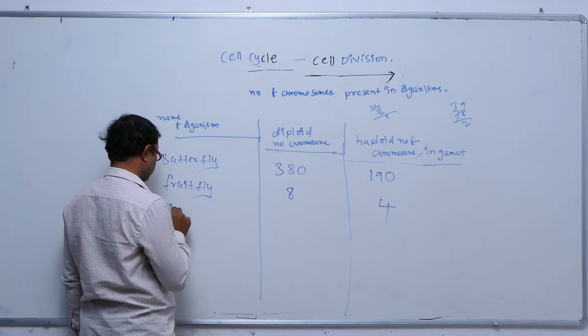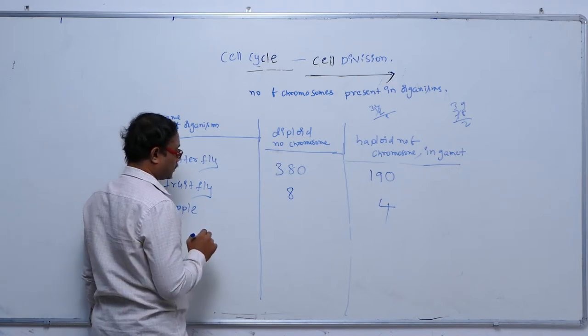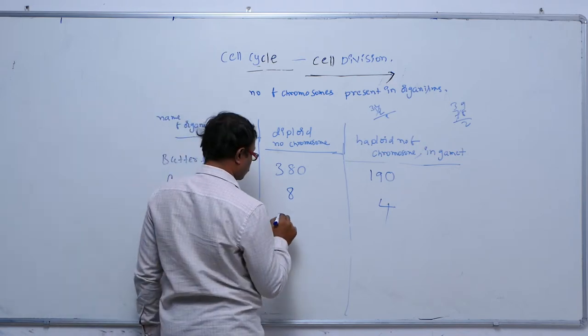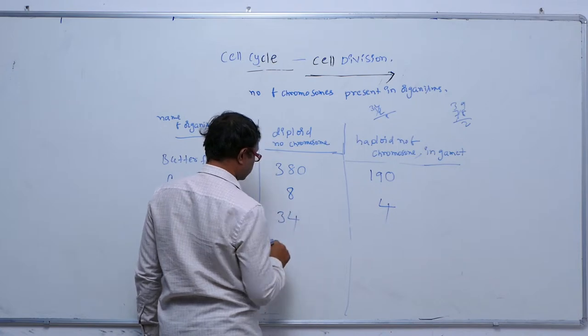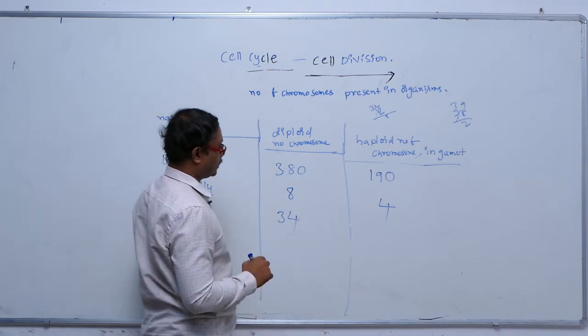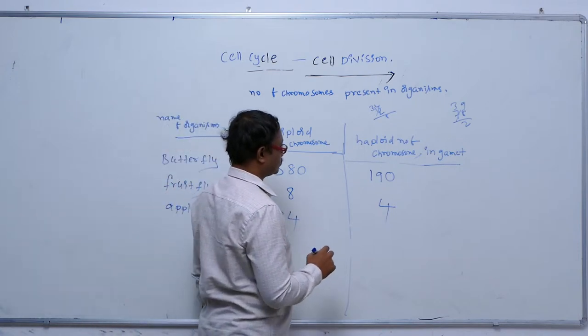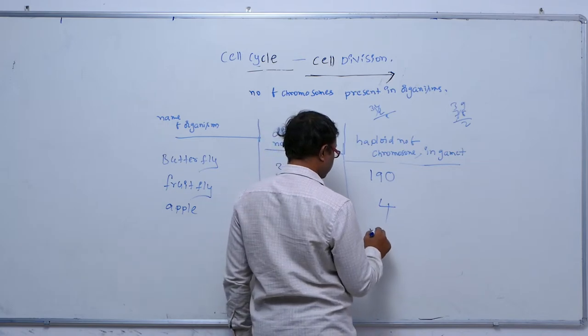In apple, the diploid number of chromosomes is 34, and the haploid number of chromosomes is 17.